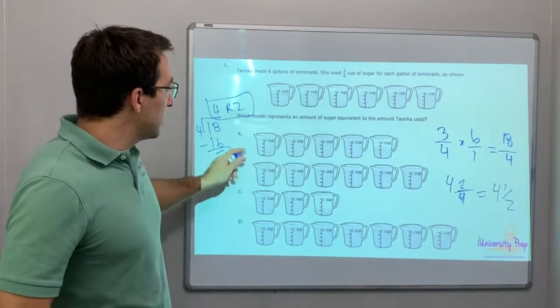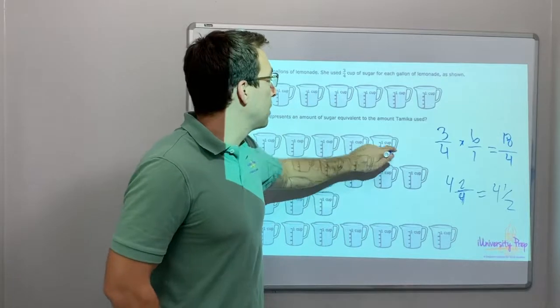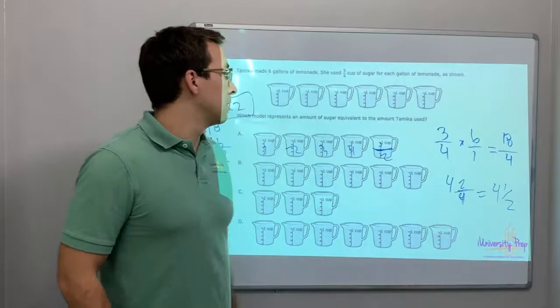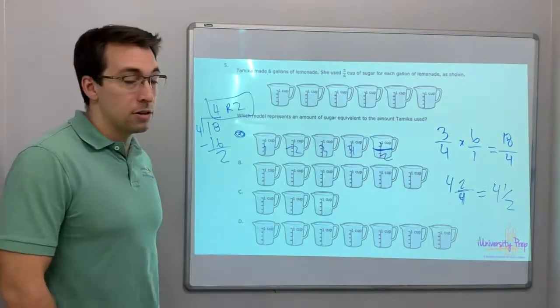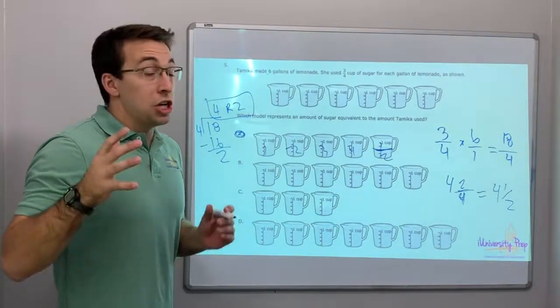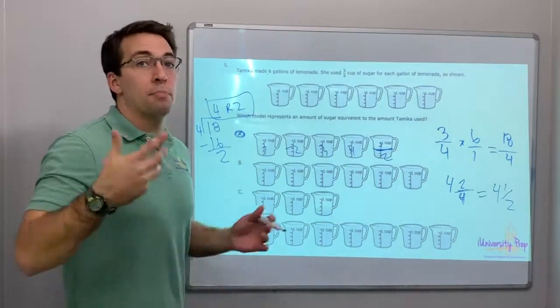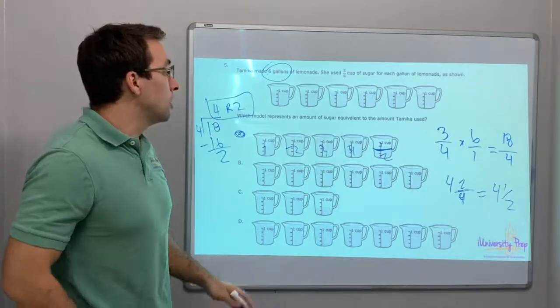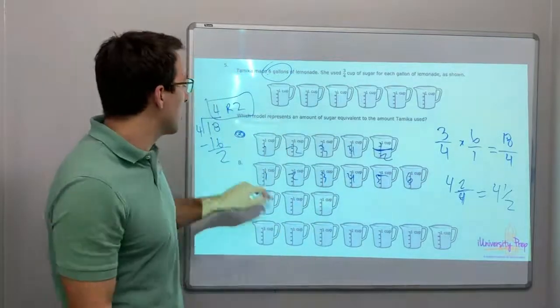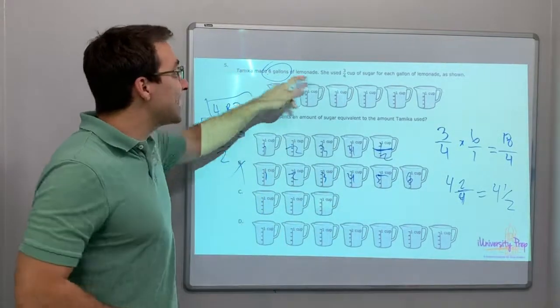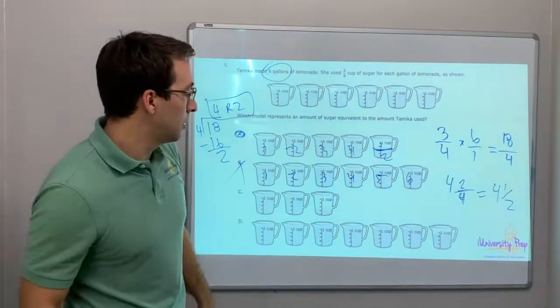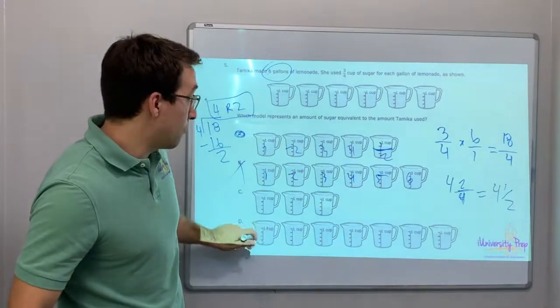What's our answer? Here it is. One, two, three, four, and one-half. A's our answer. Think about it. She used three-quarters of a cup. She did not use one cup per gallon. And she made six gallons total. One, two, three, four, five, six. Wrong! She used less than a cup per gallon. So, it cannot be six. It's got to be less than six. It's definitely not more than six.